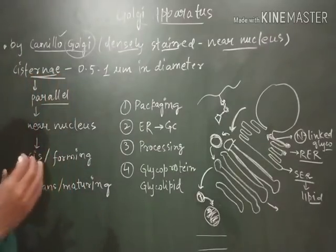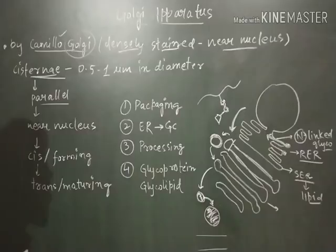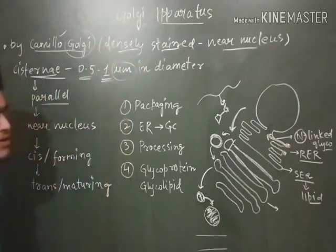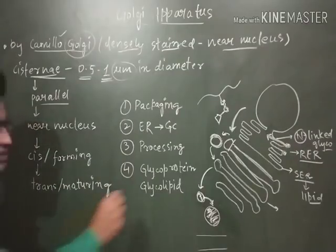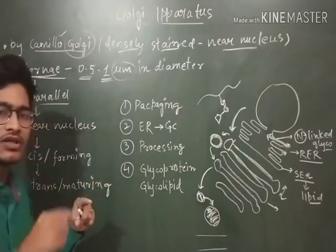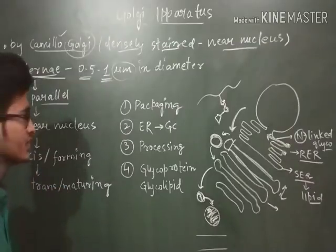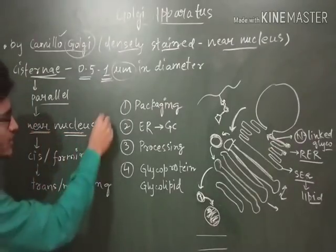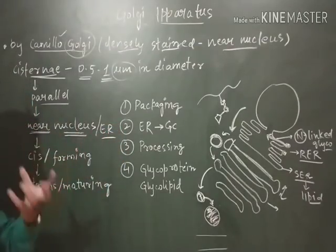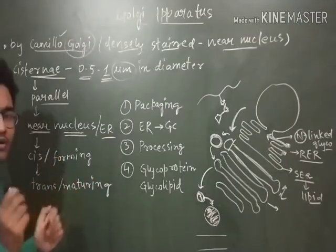So the Golgi is formed of cisternae, which give rise to vesicles as well. These cisternae are arranged in a parallel manner. The diameter of a cisternae is 0.5 to 1 micron. The cisternae are parallelly attached and give rise to vesicles, which send proteins to their desired places. They are present near the nucleus or near the ER because they need to take proteins from them and then fully process those proteins and send them to the desired phase.